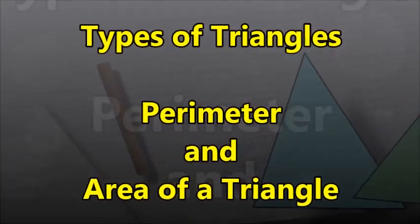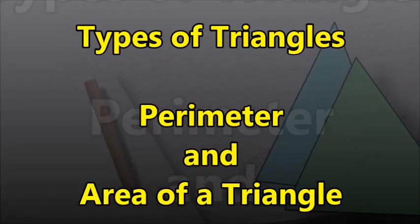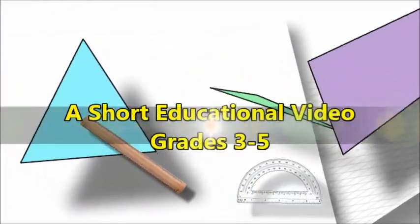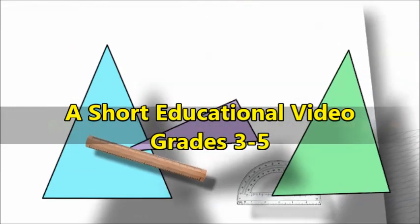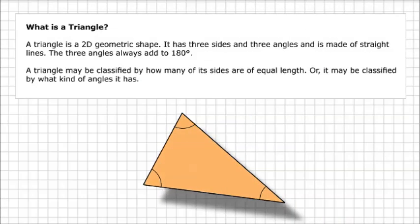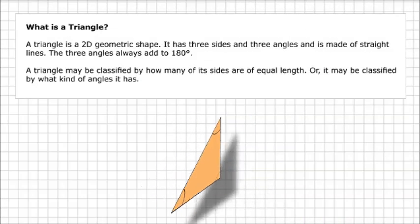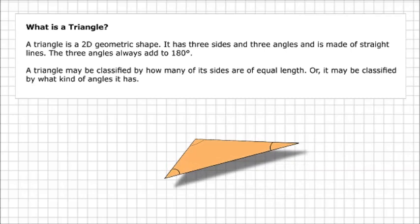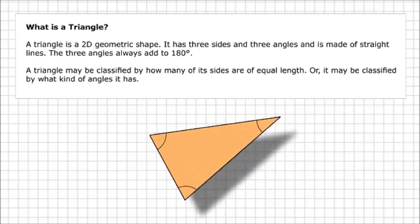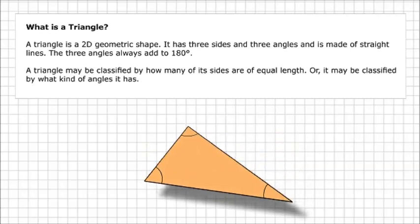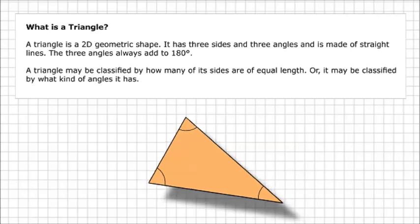Types of Triangles: Perimeter and Area of a Triangle. A triangle is a two-dimensional geometric shape. It has three sides and three angles and is made of straight lines. The three angles always add to 180 degrees. A triangle may be classified by how many of its sides are of equal length, or it may be classified by what kind of angles it has.